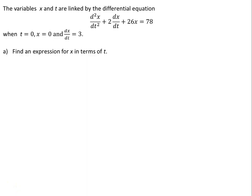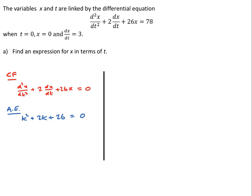For our final example, consider d²x/dt² + 2dx/dt + 26x = 78, with initial conditions x = 0 and dx/dt = 3 when t = 0. We start by finding the complementary function from d²x/dt² + 2dx/dt + 26x = 0. The auxiliary equation k² + 2k + 26 = 0 has solutions k = -1 ± 5i, so the complementary function is x = e^(-t)·(a·cos(5t) + b·sin(5t)).